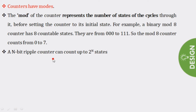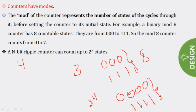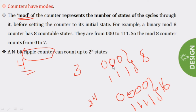For an n-bit counter, we can count up to 2^n states. Using a 3-bit counter we can count from 000 to 111 — a total of 8 states. Using a 4-bit counter we can count up to 2^4 = 16 states, from 0000 to 1111. The mod of a counter represents the number of states — please remember this point.